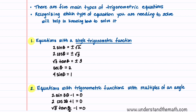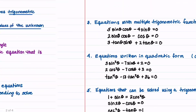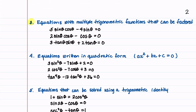The second type is a trigonometric equation with trigonometric functions that contain multiples of an angle — the equations shown here have an angle other than theta. The third type is equations with multiple trigonometric functions that can be factored. In each of these three equations, there is a trig function that's common to both terms and can be factored out.